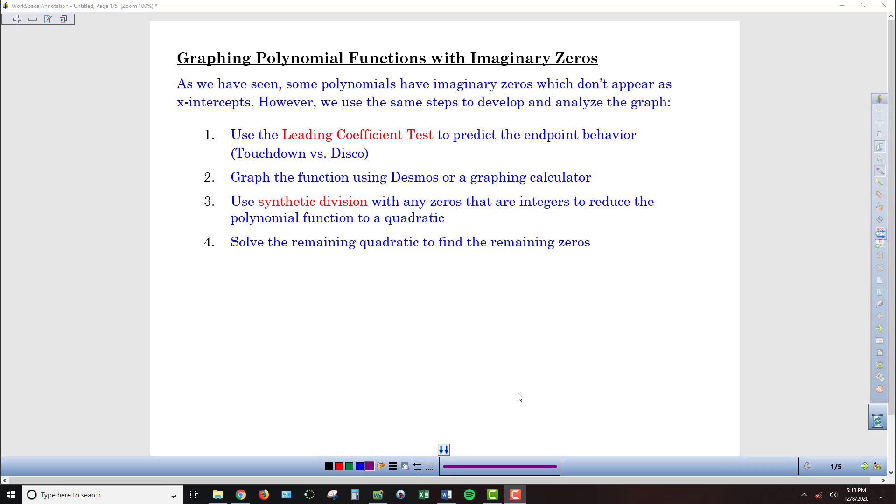Some polynomial functions have imaginary zeros, so those zeros do not have a specific location that we can identify from a graph. The only way we'll be able to find them is through some algebraic means. Now we can use the graph to help us get started in a similar fashion to what we saw in the last lesson.